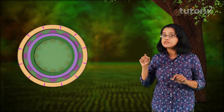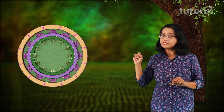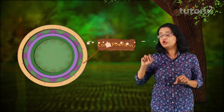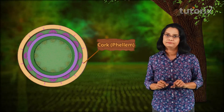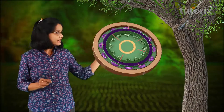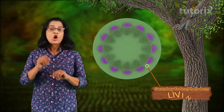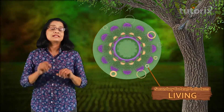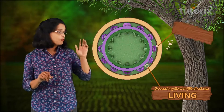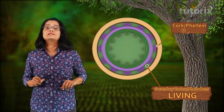When phelogen forms tissues on the outer side, those tissues are called cork or phelim. The cells of secondary cortex or pheloderm are living, while the cells of cork consist of dead and compactly arranged rectangular cells.